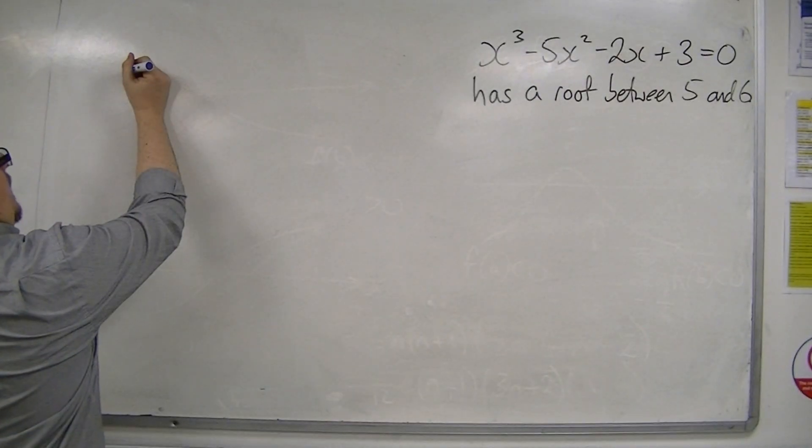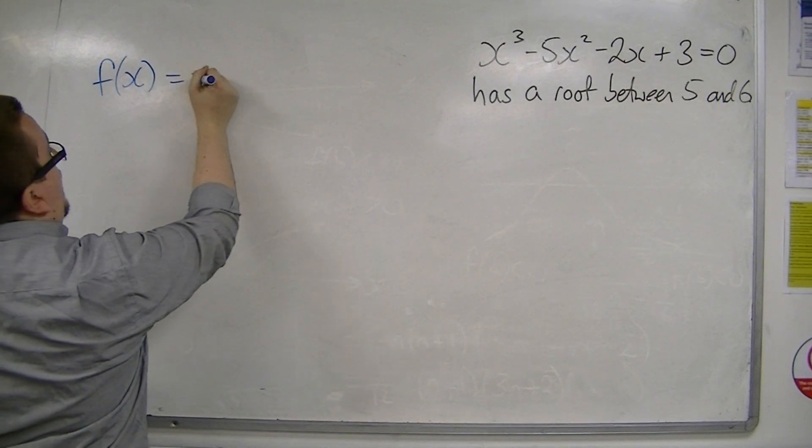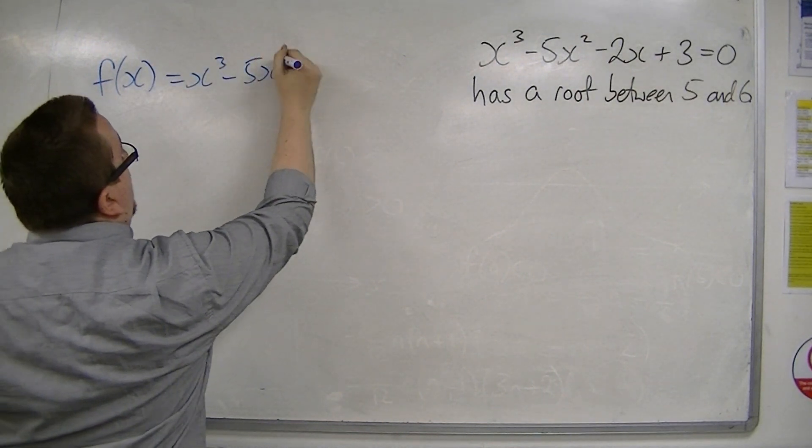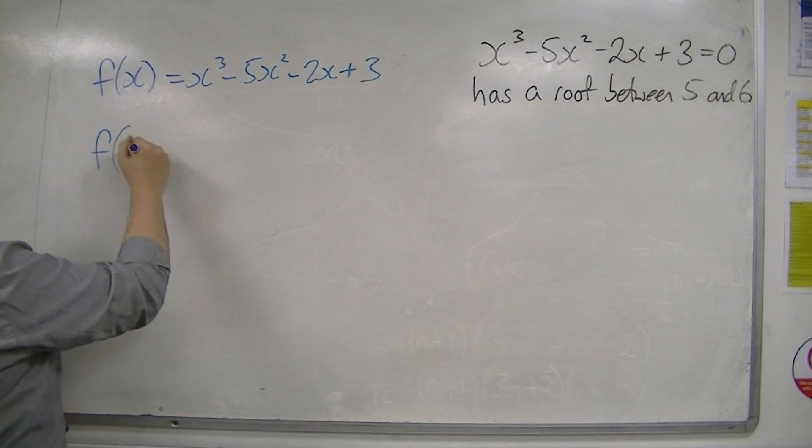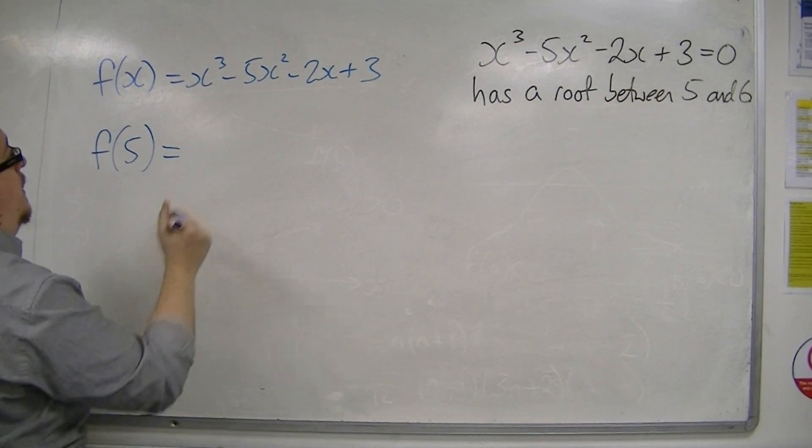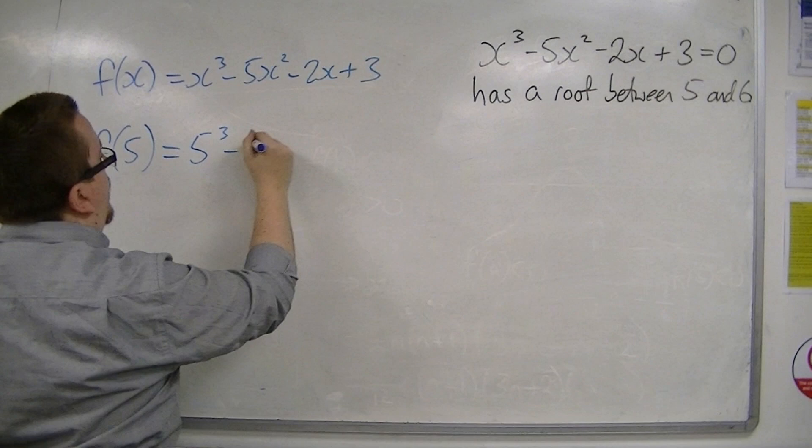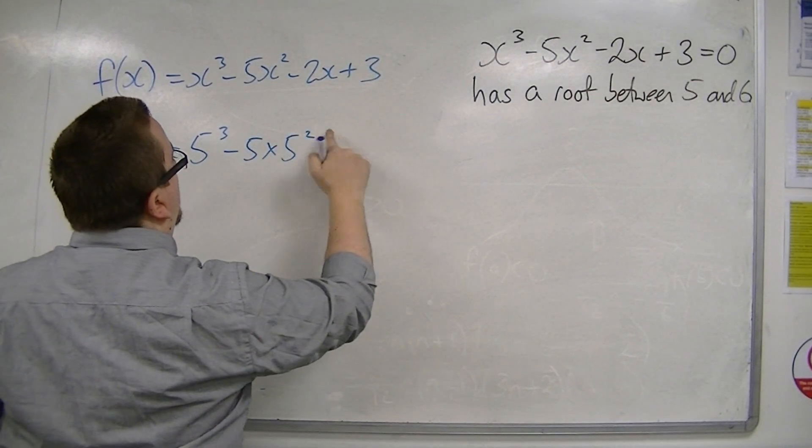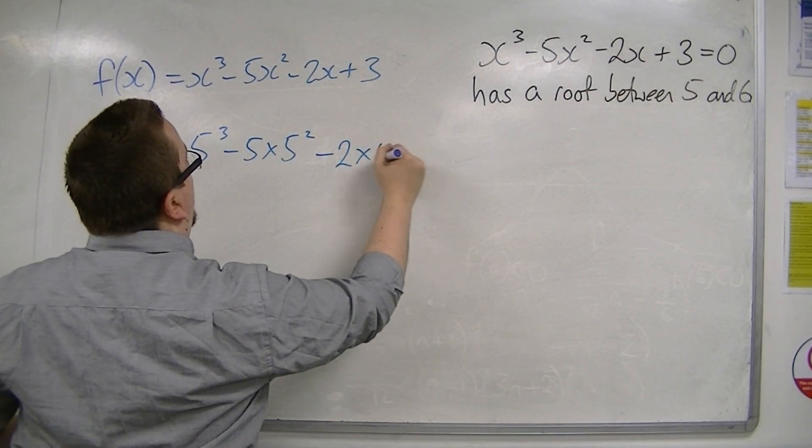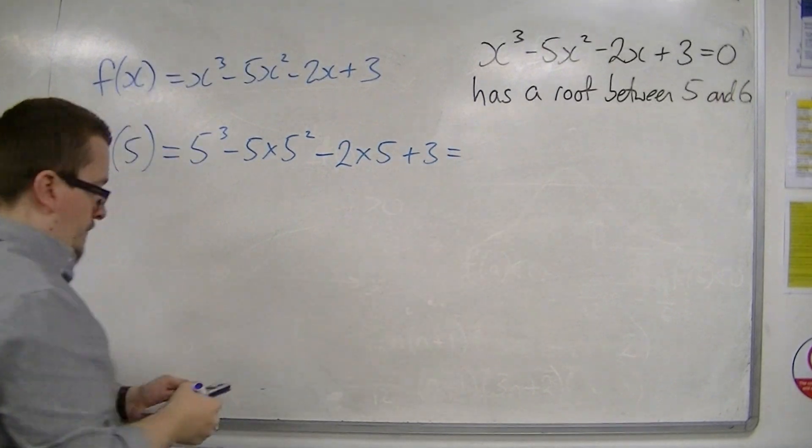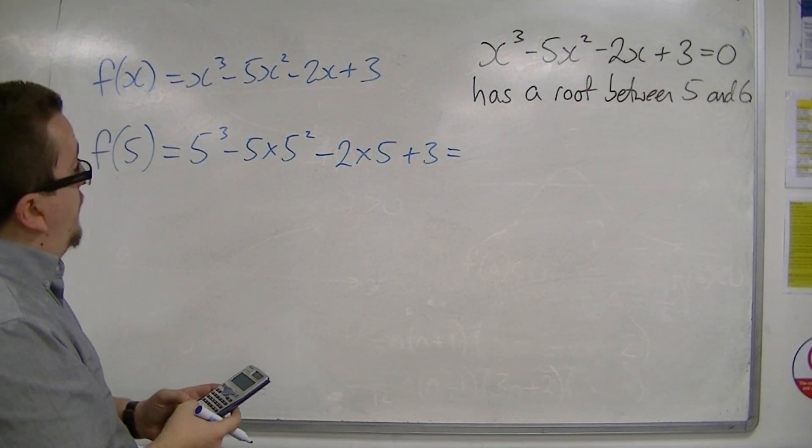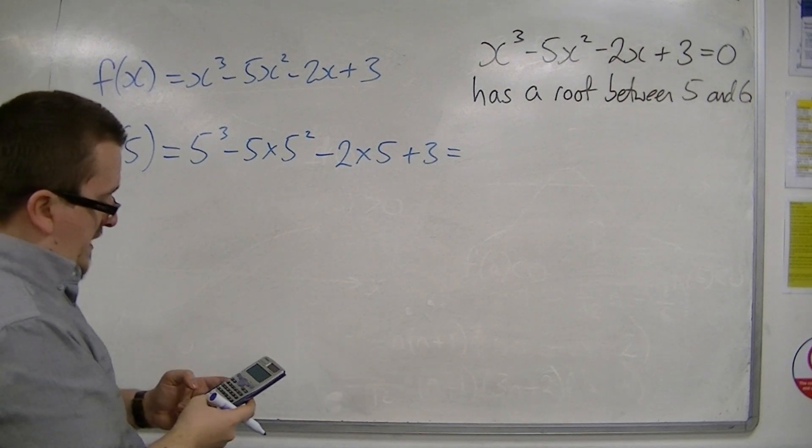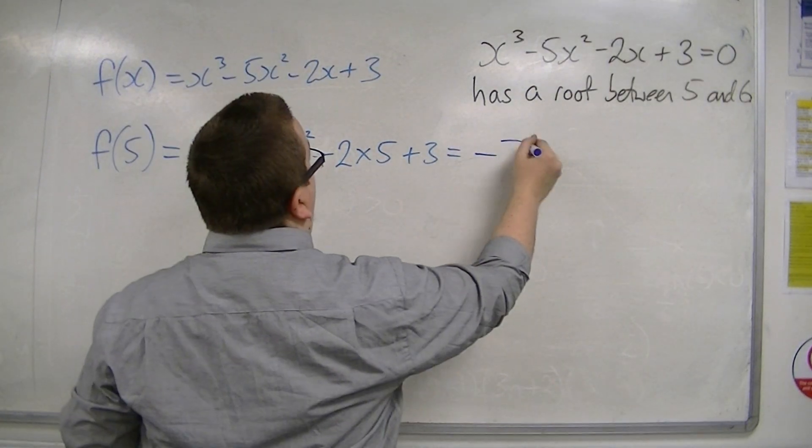Let's say f(x) is x³ - 5x² - 2x + 3, and so I substitute in 5. So I get 5³ - 5 × 5² - 2 × 5 + 3, and I get -7.